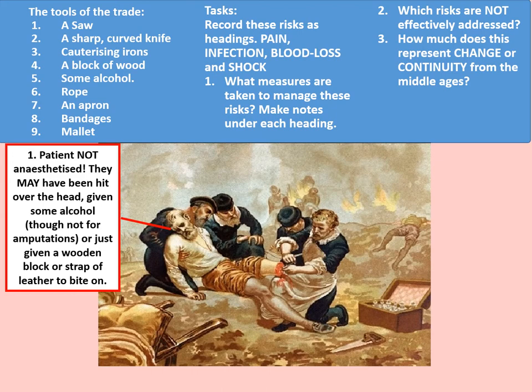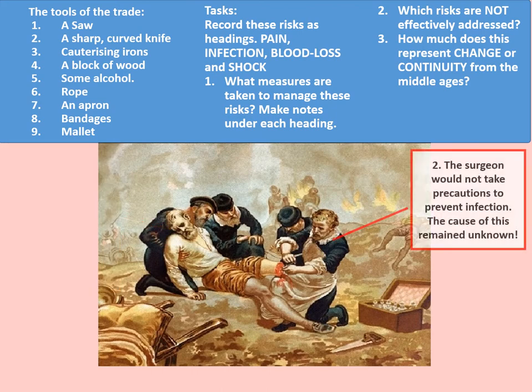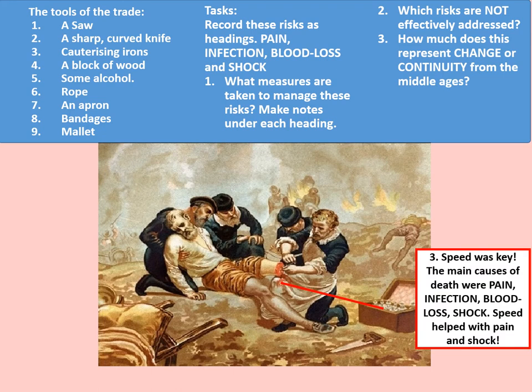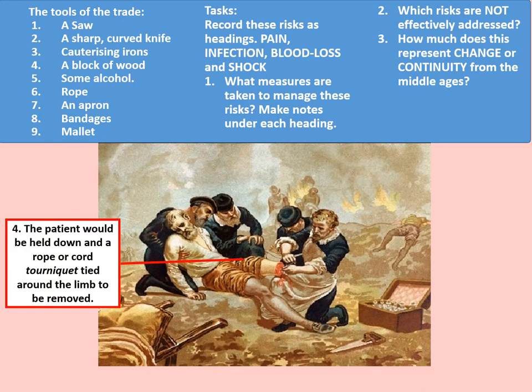The surgeon would not take precautions to prevent infection, as the cause of infection remained unknown at this time. Thirdly, speed was key — the main causes of death were pain, infection, blood loss, and shock, and speed helped with pain and shock. The patient would be held down and a rope or cord tourniquet tied around the limb to be removed, restricting blood flow to prevent the patient bleeding out during the operation.